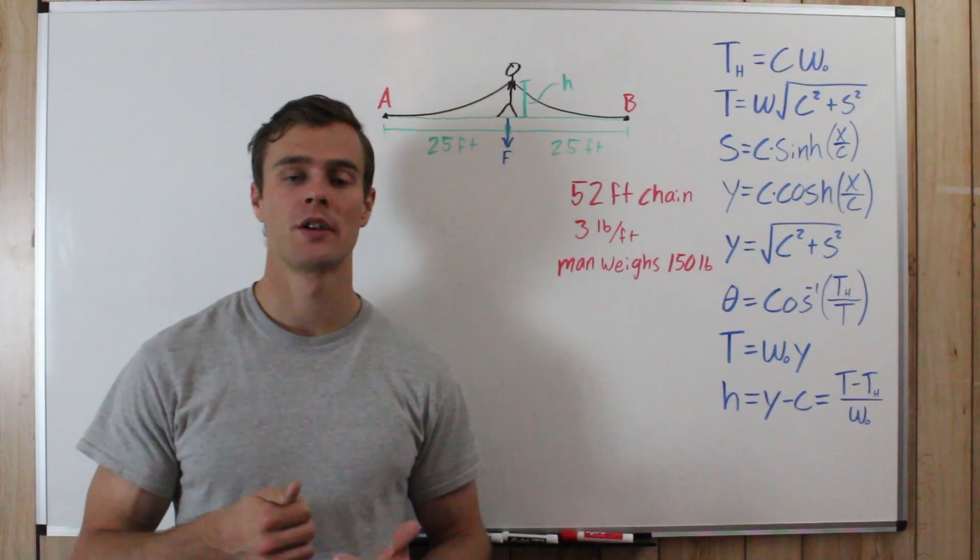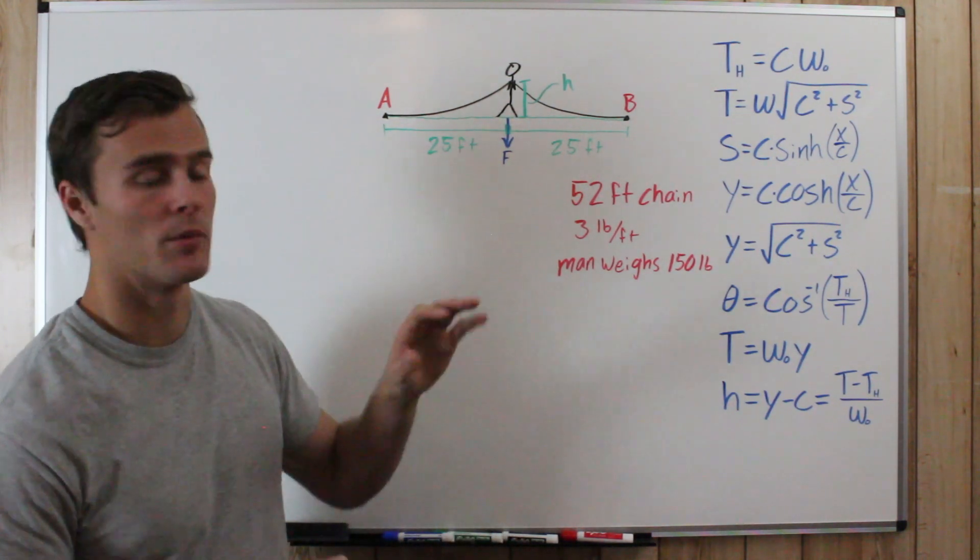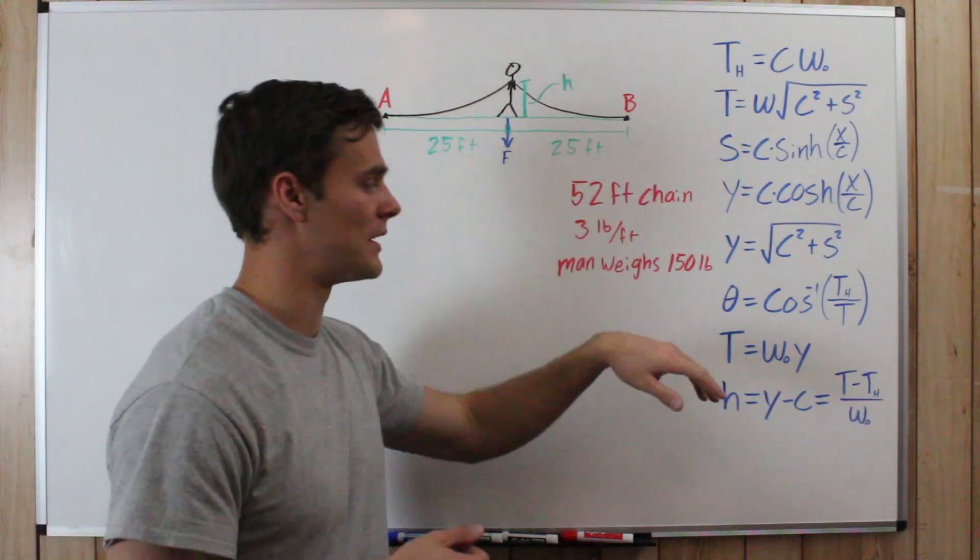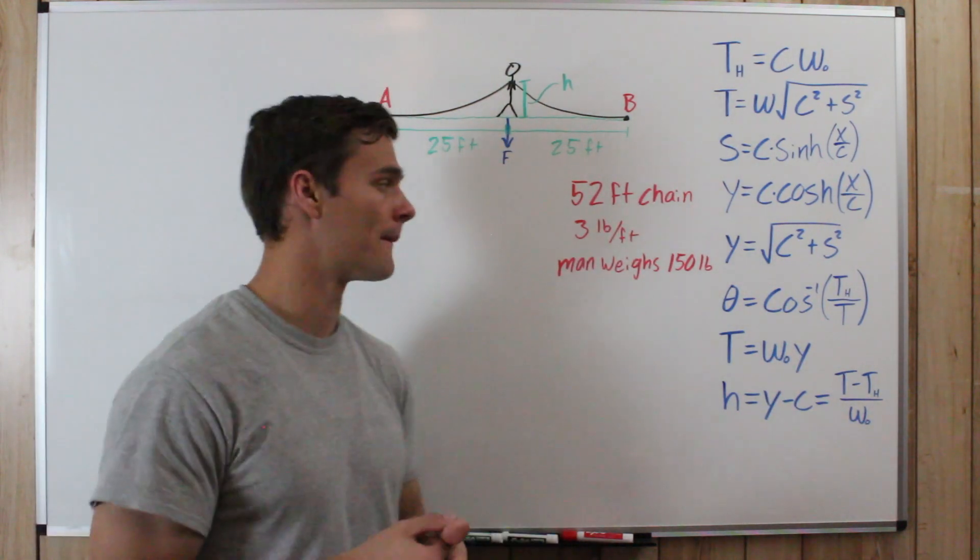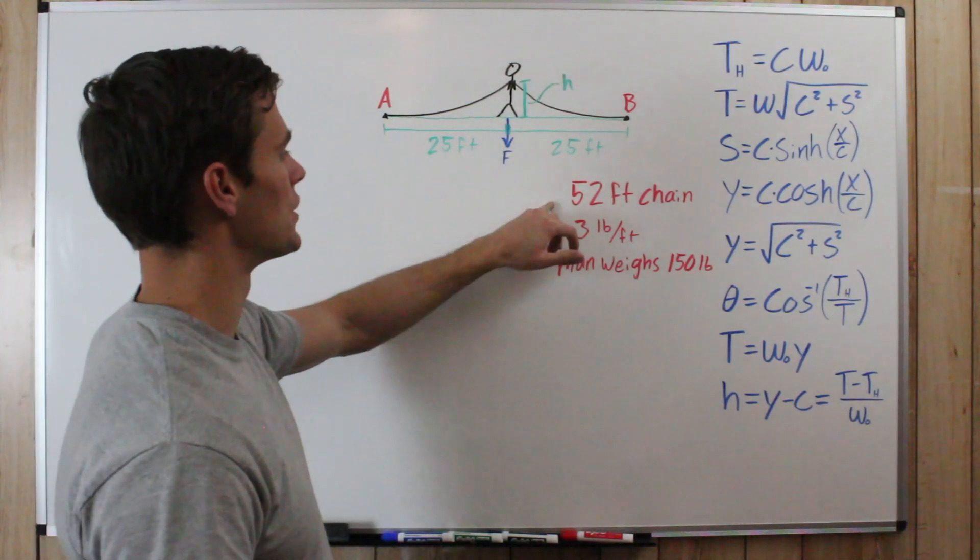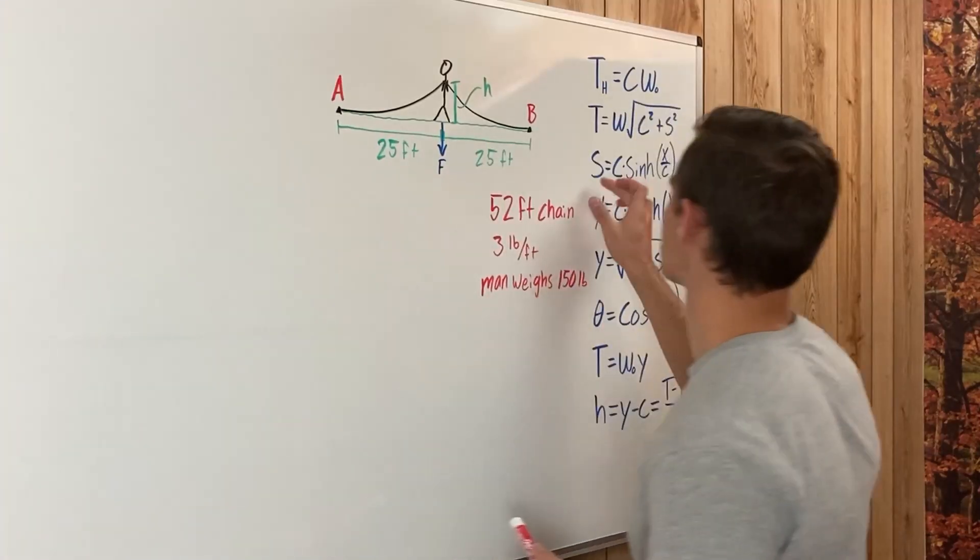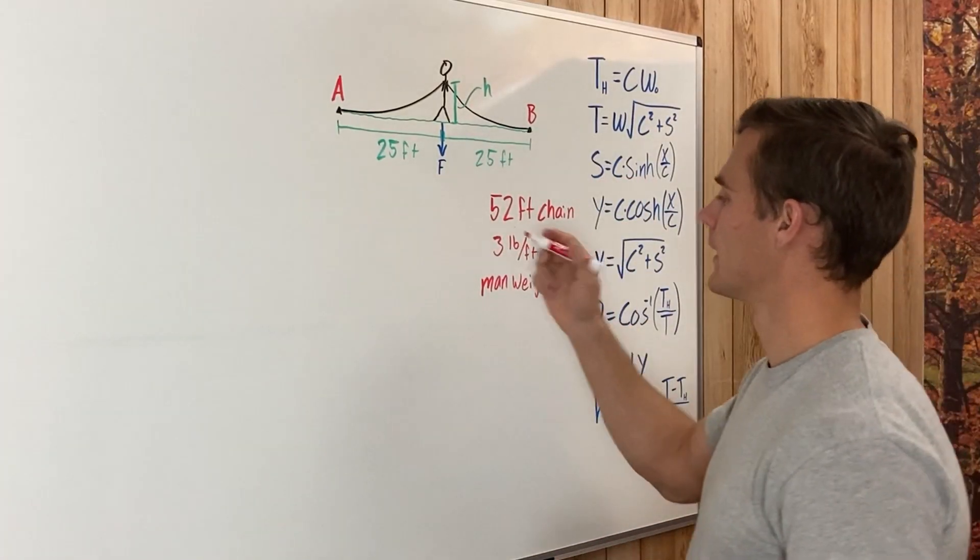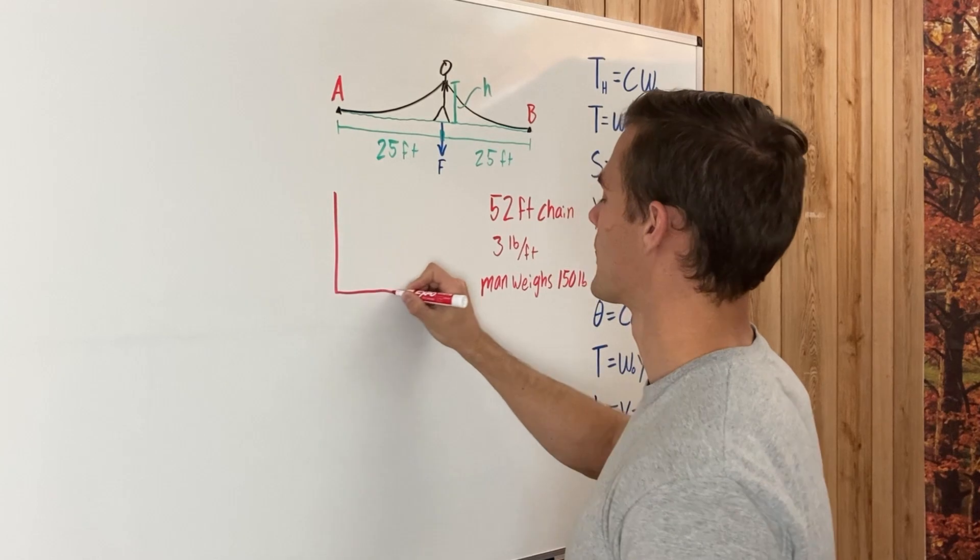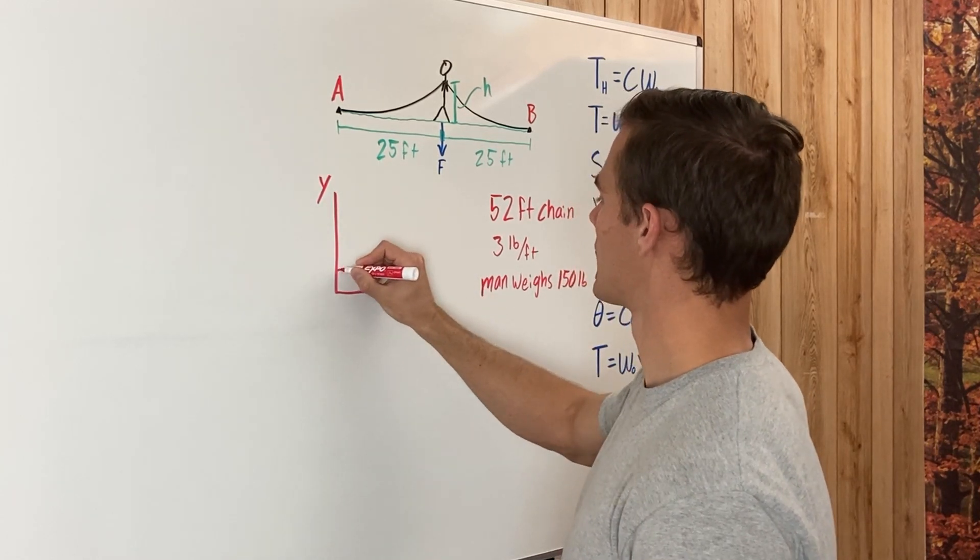So the first thing we want to do is identify what variables we do know and what variables we don't know, and which equations we need to use to solve for that. We have our 52 foot chain, and we're going to set up our coordinate system like this where this is our x direction, that's our y direction.